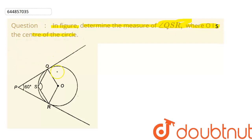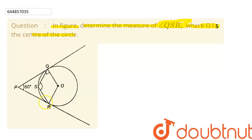Let us visualize this question using the given diagram. Here O is the center of the circle, P is an external point from where two tangents have been drawn, and OQ and OR are the radii of the circle. We know that the angle between the radius and the tangent drawn from an external point is always 90 degrees, so angle OQP and angle ORP are both 90 degrees.